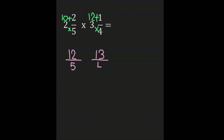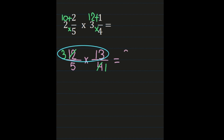Now we have a fraction times a fraction, so we'll multiply numerator times numerator and denominator times denominator. But first, I see that 4 and 12 share a common factor of 4, so I'll simplify before multiplying. 4 divided by 4 is 1 and 12 divided by 4 is 3. Now multiplying numerators: 3 times 13 gives a new numerator of 39. Then multiplying denominators: 5 and 1; 5 times 1 is 5.